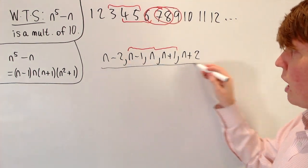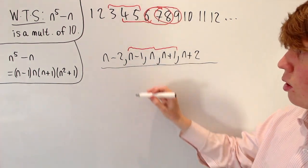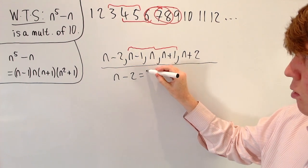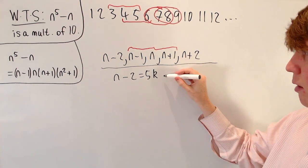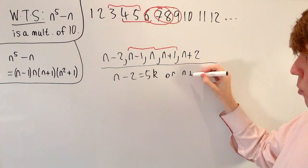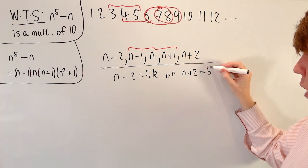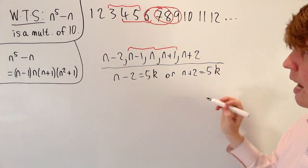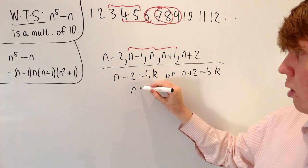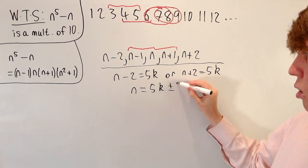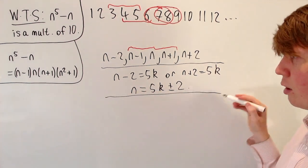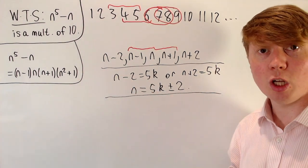So in either case, with n plus 2 or n minus 2, we can say n minus 2 is perhaps some multiple of 5, call it 5k, or we've got n plus 2 is equal to 5 times some integer k. So in either case, we get n is equal to 5k plus or minus 2.